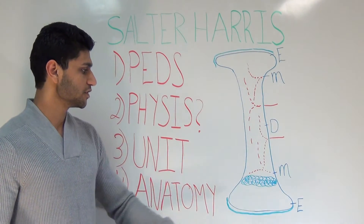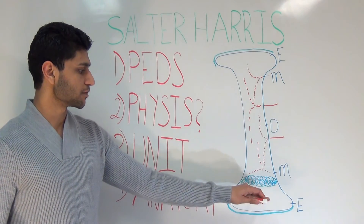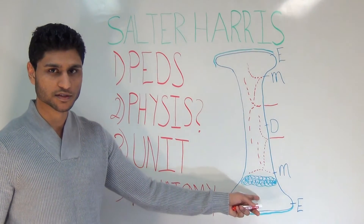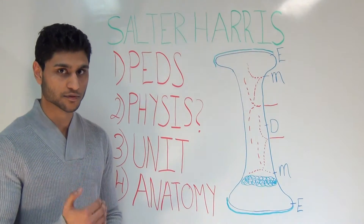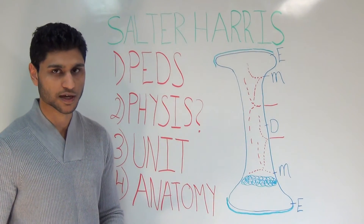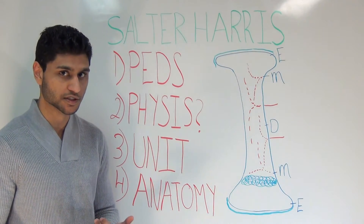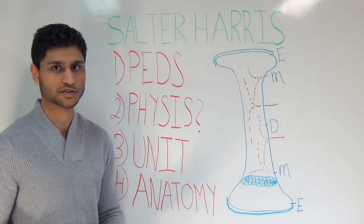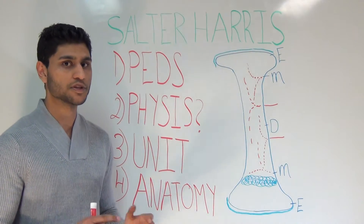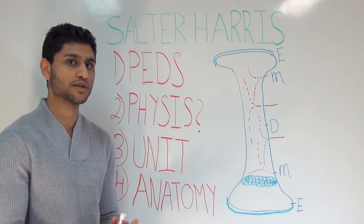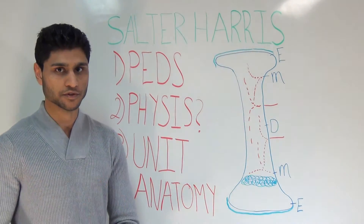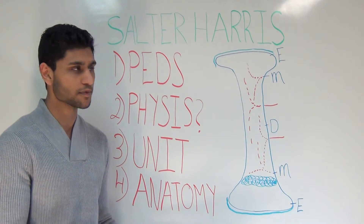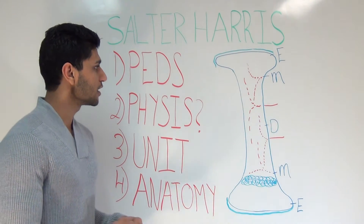Before we continue, just so you remember from your basic histology about the growth plate — it has a number of layers. If you recall the zone of proliferation, zone of ossification, calcification, and the germinal layer — if you need help with that, I highly recommend you go back, review your histology notes, and then come back and watch this video.